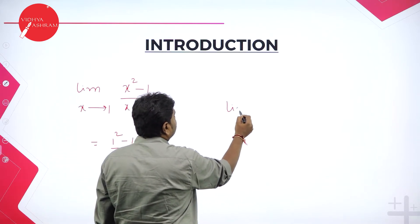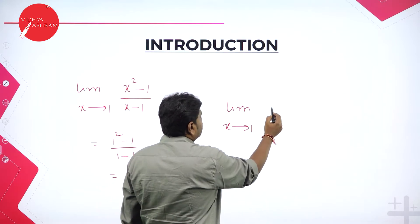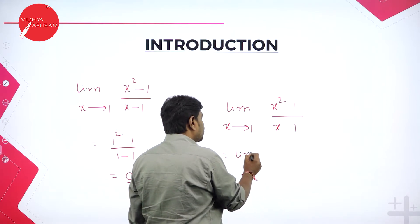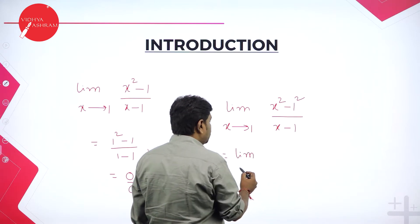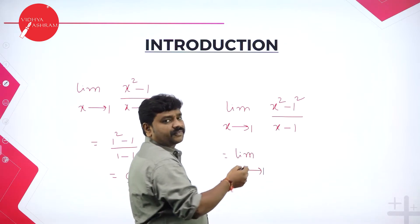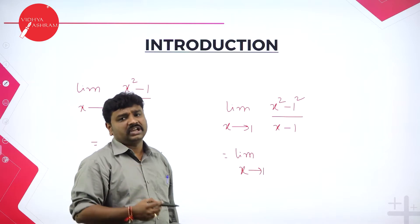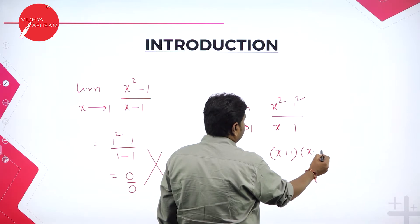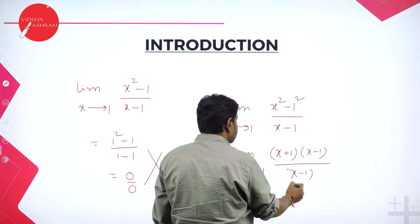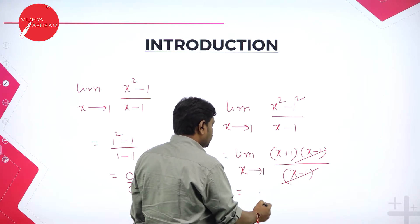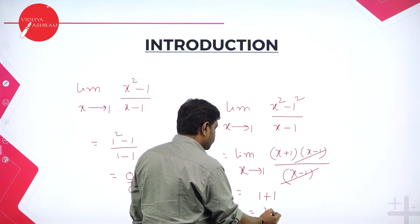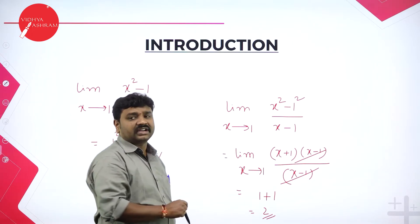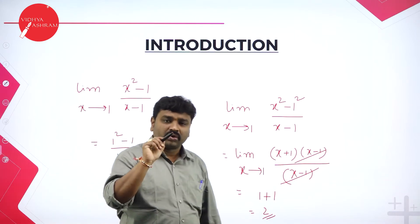Before we apply limit, we should simplify. Limit x tends to 1, x square minus 1 by x minus 1. Do not apply limit first — let us simplify. Numerator: can I write 1 as 1 square? So it is now in the form a square minus b square, which is a plus b into a minus b. So I can write this as x plus 1 into x minus 1 divided by x minus 1. Cancel x minus 1. Now in the place of x, put 1 — it becomes 1 plus 1, that is 2. You got a unique value.